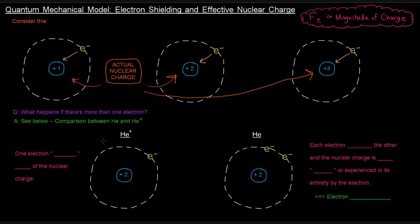To answer that question, we want to compare helium to helium plus. Both of these have two protons in their nucleus, because helium, by definition of having the atomic number of two, has two protons in the nucleus.